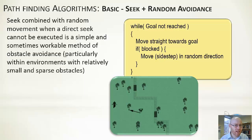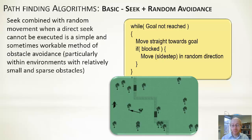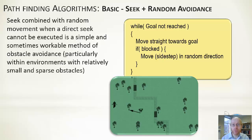It's too crude for a lot of environments, but not always unnecessarily so. For a largely open environment with, for example, trees, that algorithm would work perfectly fine — you'd go through, hit something, move to the side, and be past it. It's good within sparsely populated environments where mostly it's open.